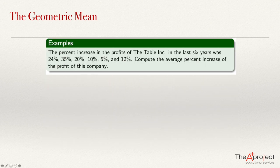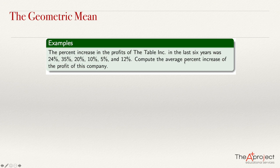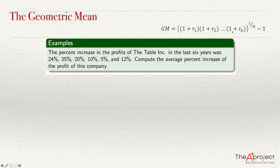The percent increase in the profit of a company in the last 6 years was 24%, 35%, 20%, 10%, 5%, and 12%. We have the percent increase in each of the years and we want to compute the average percent increase — the geometric mean percent increase per year of this company. The formula requires getting the geometric mean of the product of numbers resulting from adding 1 to each of the percent increases, then subtracting 1 at the end.